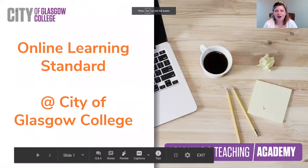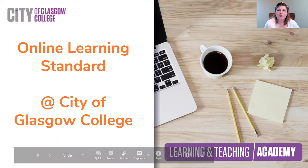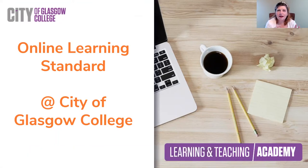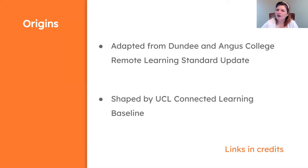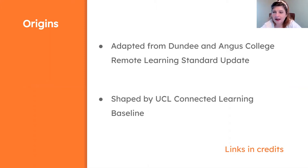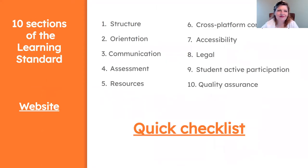We're going to be talking today about the Online Learning Standard at City of Glasgow College. I work in the Learning and Teaching Academy in the college, and I'm part of a lecture development team. Now, we have a Learning Standard in the college, and that's been adapted from Dundee and Angus College Remote Learning Standard, which in turn was adapted from University College London Connected Learning Baseline. There are credits for both of those things within the standard themselves if you want to go and investigate them further.